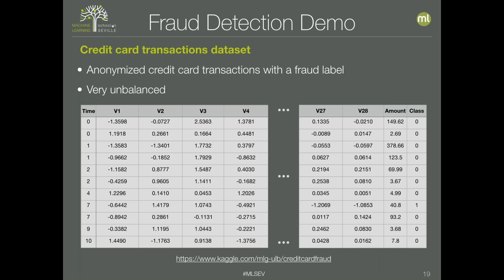The dataset is the credit card transactions dataset from Kaggle. It's quite famous and very imbalanced. Each row represents a credit card transaction with a time field, an amount, and a class (fraudulent or non-fraudulent). There are also 28 anonymized numeric fields — possibly principal components — representing each transaction.